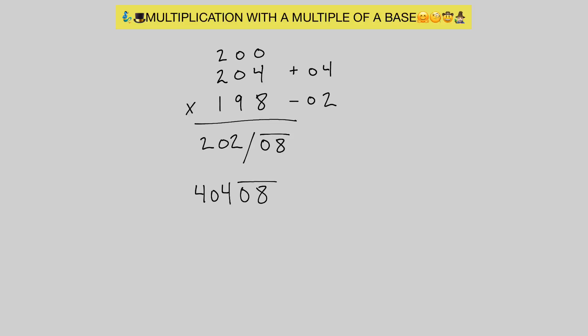Now to complete this, we use all from 9 and last from 10. We subtract 1 from 404 to get 403. Then 9 minus 0 is 9 and 10 minus 8 is 2. So our answer is 40,392.